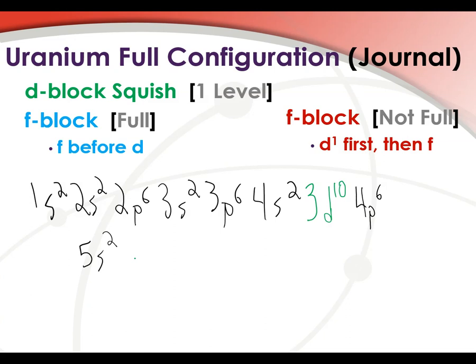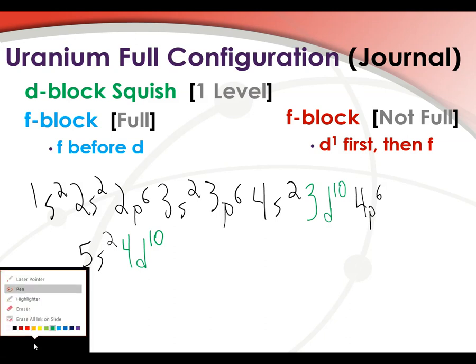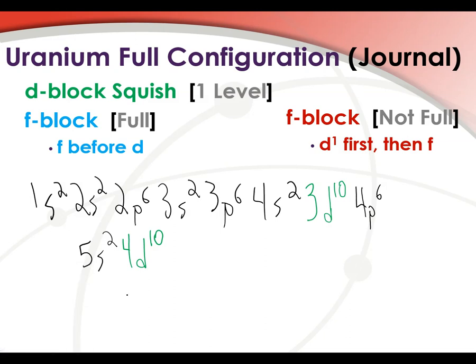And just like before, our D is going to be 1 less. So we are now going to have 4d10, because it's going to go through the whole thing. Remember, we're trying to get to number 92, which is uranium, so we've got a long way to go. So after 4d10, we are then going to be at 5p6.